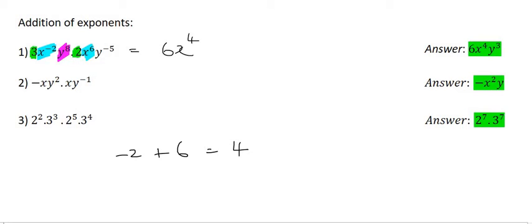Then we look at the y to the power of eight and y to the power of minus five. Well we're supposed to add them so that's going to be eight plus minus five, but plus and minus just gives you a minus so it's actually just saying eight minus five and that's three. So it's y to the power of three.